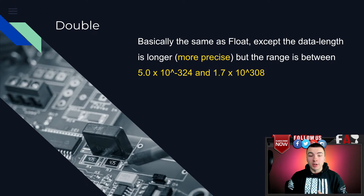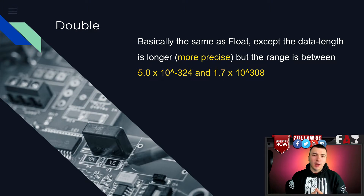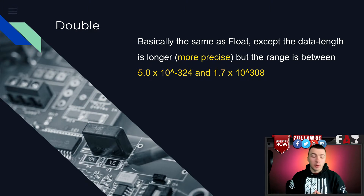Next up on the list is the double. Basically, double is the same thing as a float, except the data length is longer, which means it is more precise. Some games will use this; however, it's not really a common scan type for you to use.